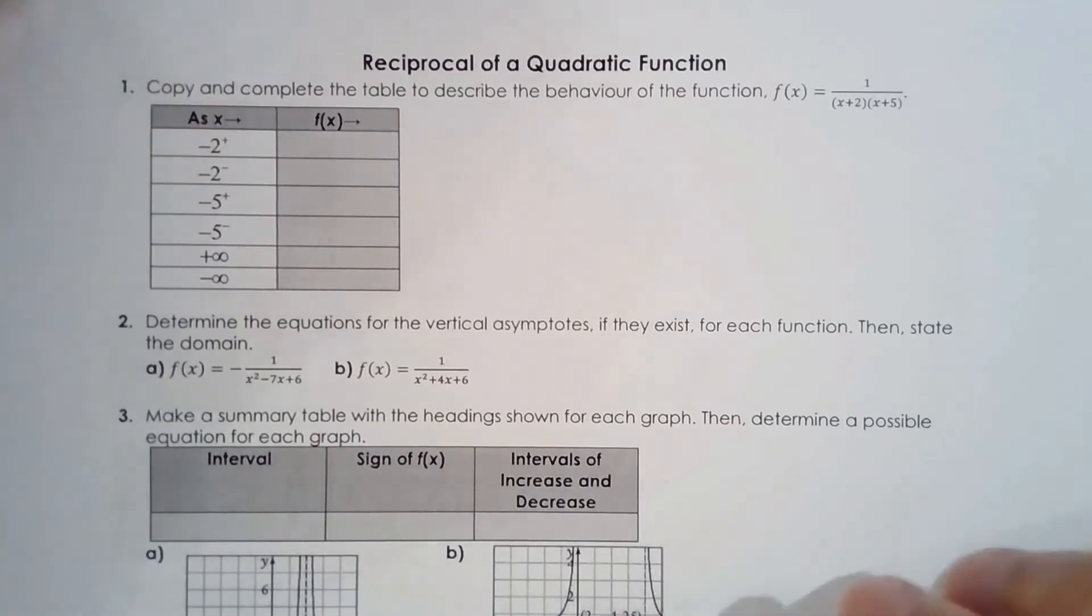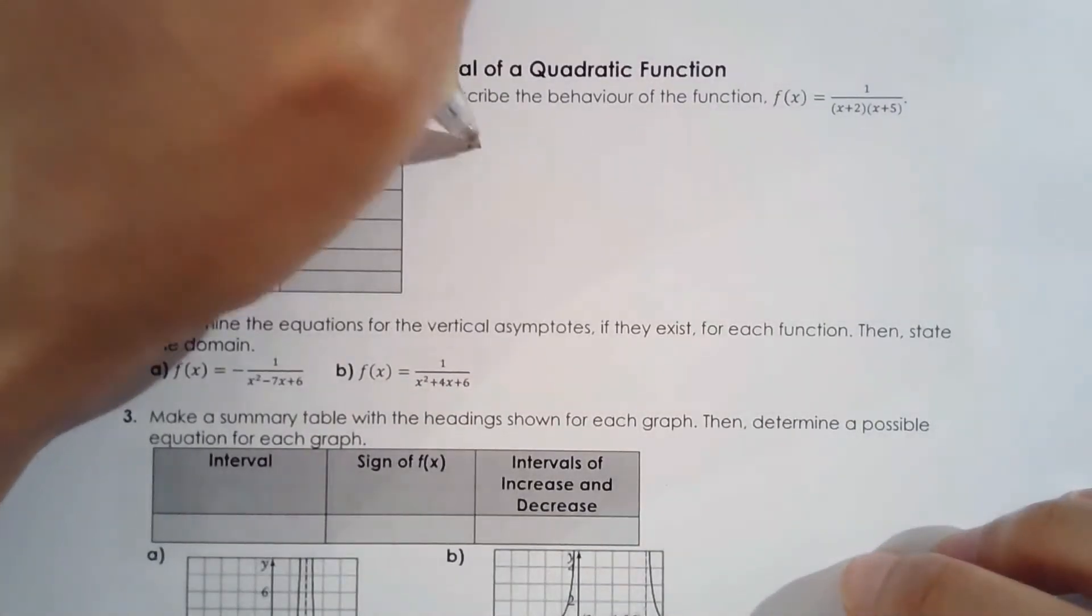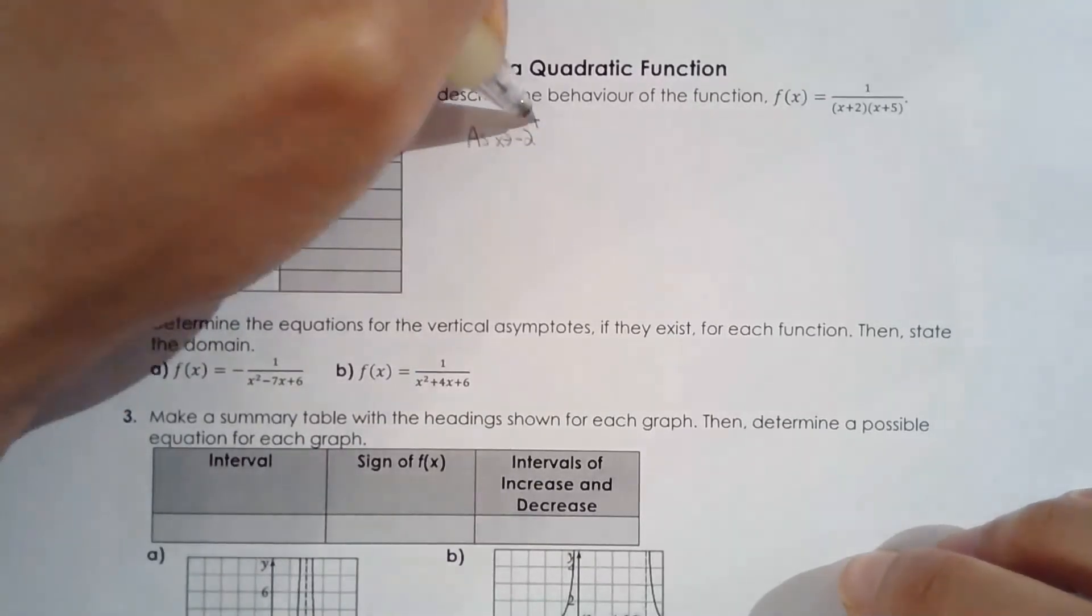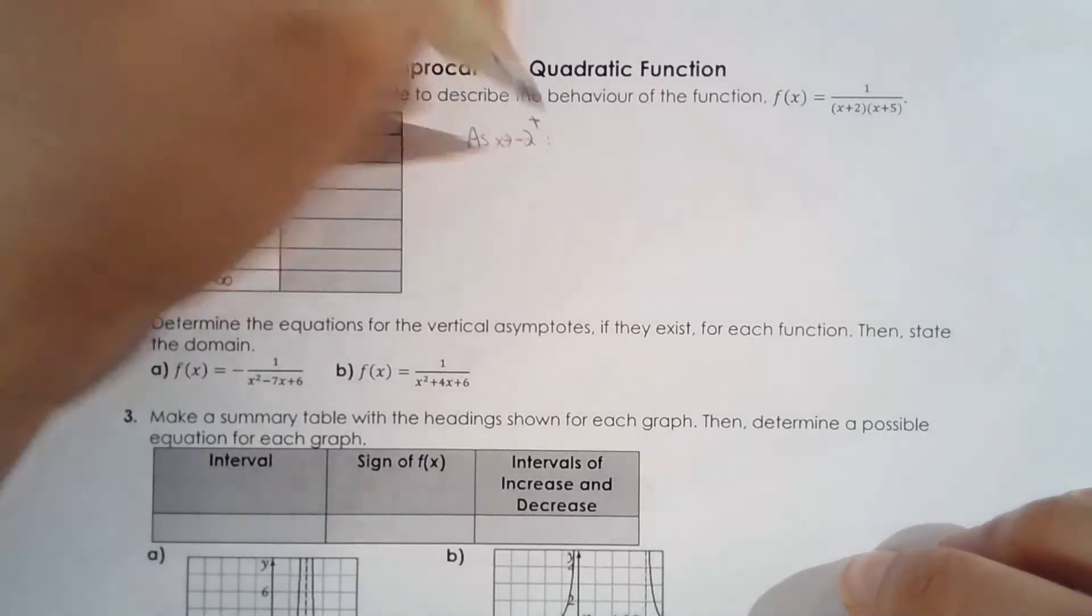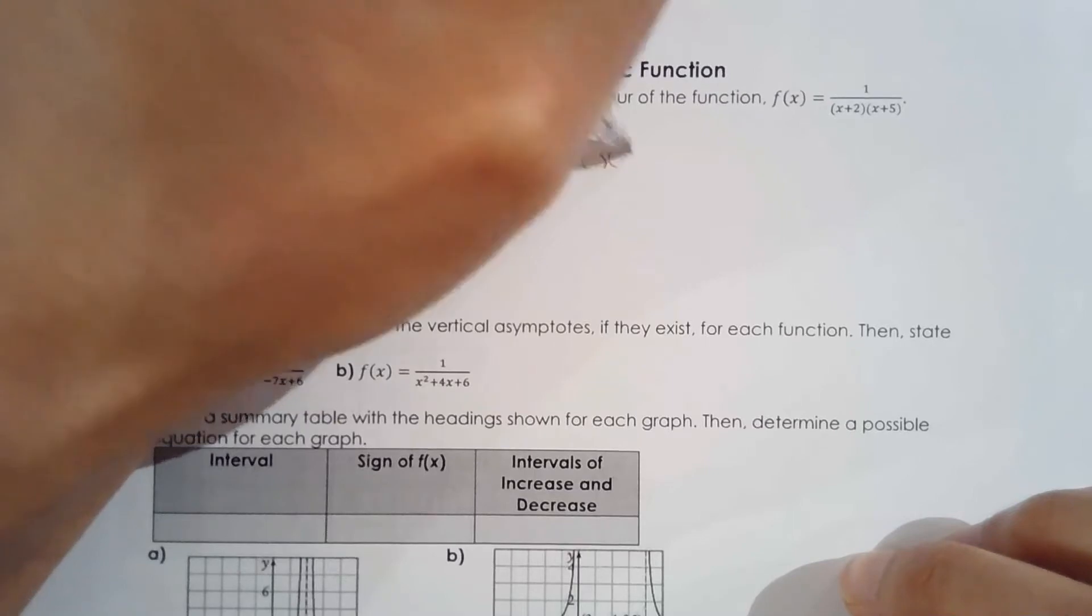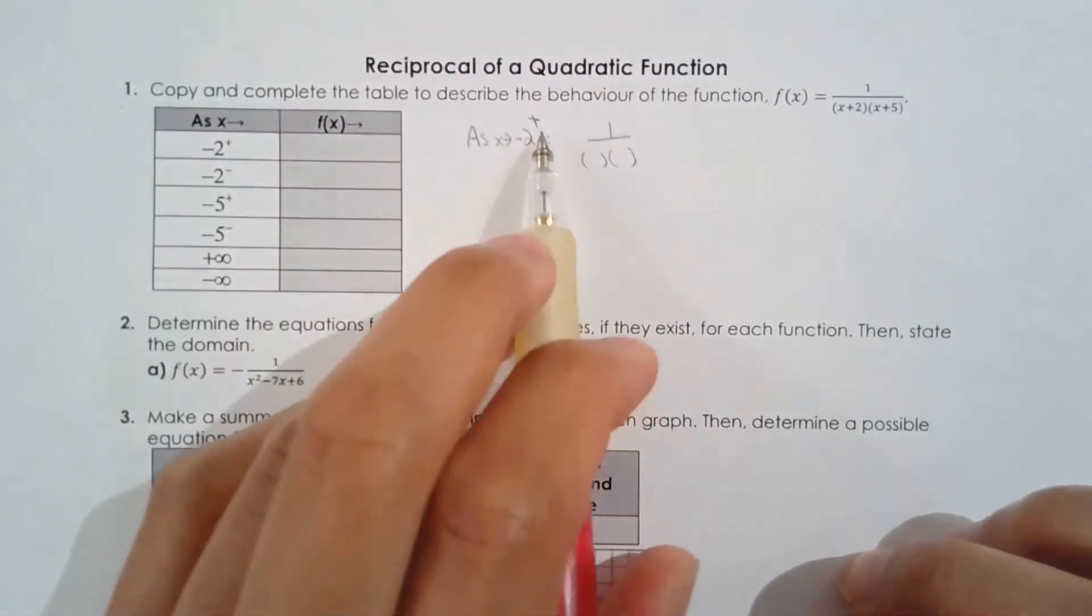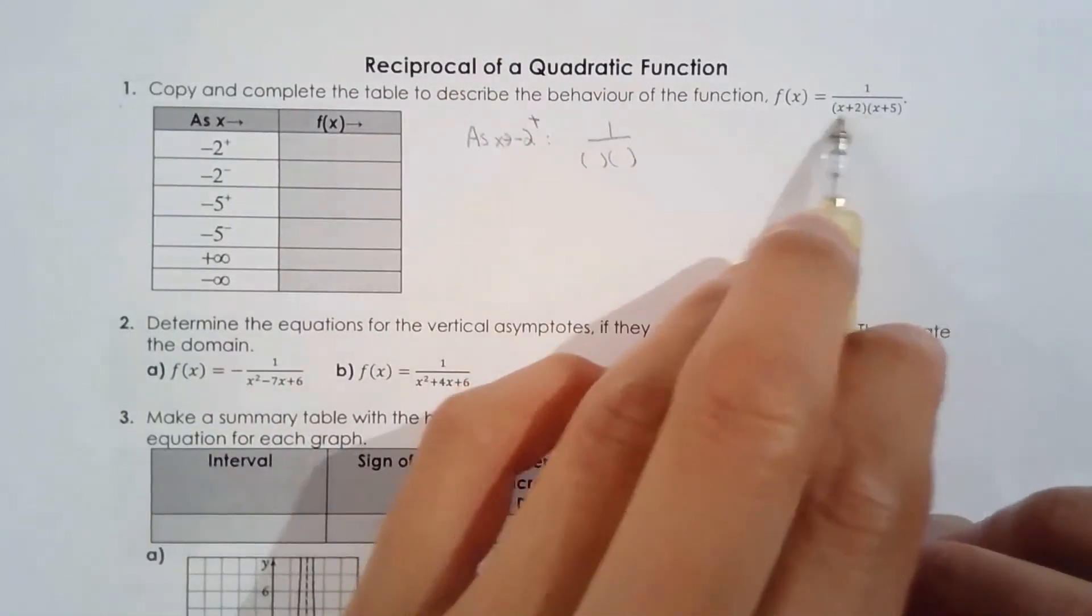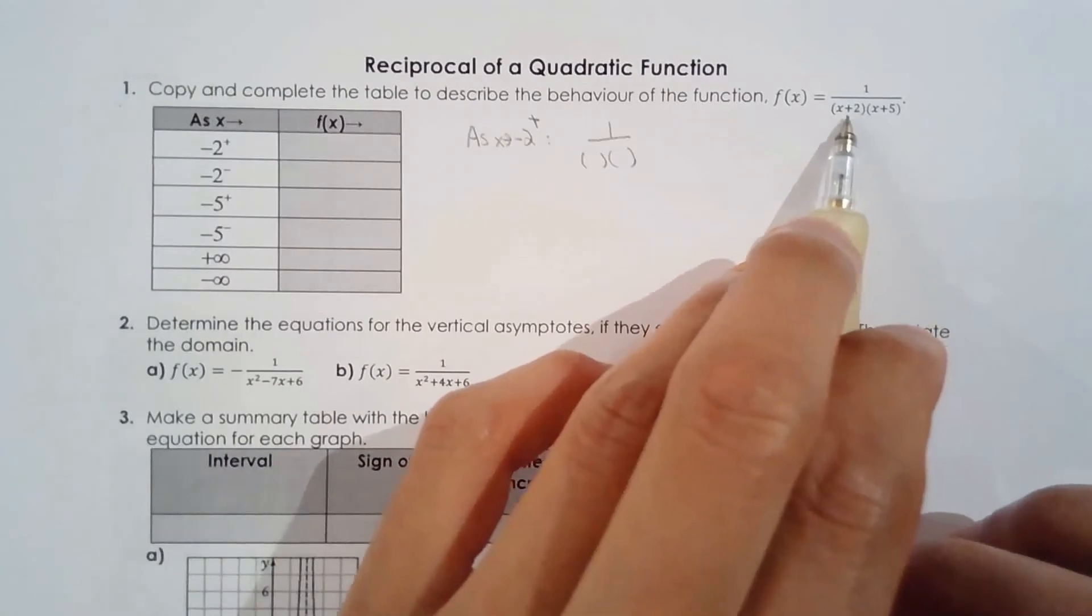So what I also could do is show you this. As x approaches negative two from the right, you have this. And you use your imagination a little. So negative two from the right, this factor here, x plus two, if it's slightly greater than negative two,